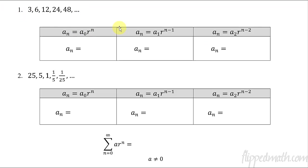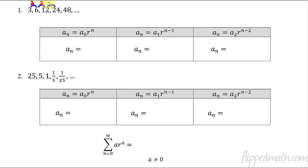Here's a sequence of numbers: 3, 6, 12, and so forth. I want to come up with a rule that tells us the nth number of the sequence. If I want the third number, I should be able to plug in 3 and get 12. So first let's figure out what the common ratio r is. How do I go from 3 to 6, from 6 to 12, from 12 to 24? You're just multiplying by 2. So my r in this case equals 2.